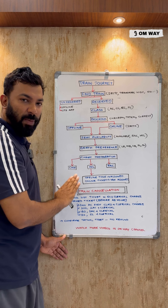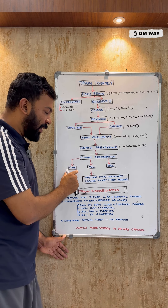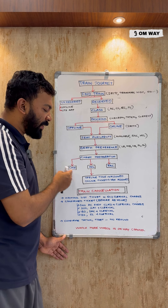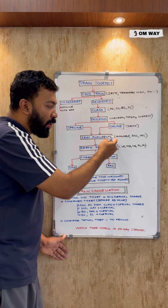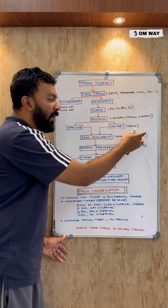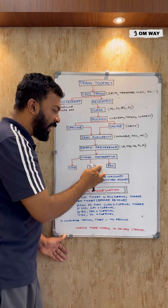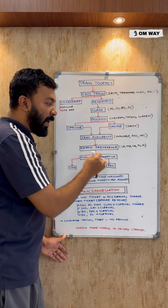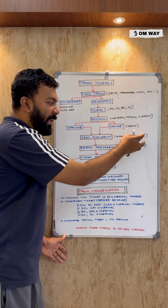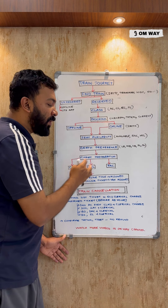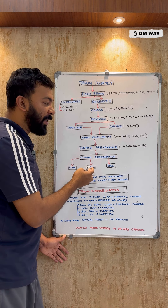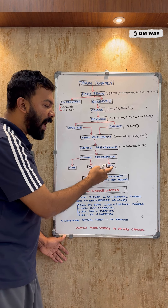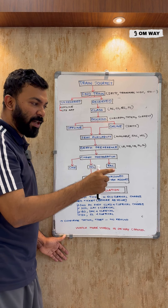No worries. In the final chart, your seat will be allocated. During the last seat allocation, the award will be finalized. When a ticket is booked on the RAC or waiting list, please check the RAC waiting list to see if a seat becomes available.